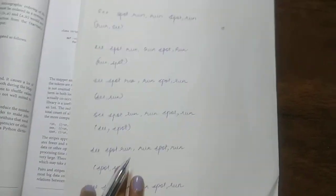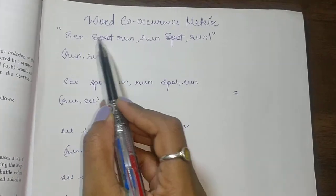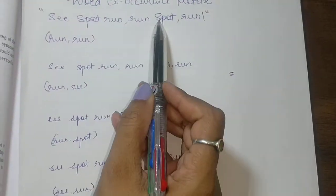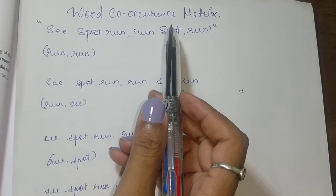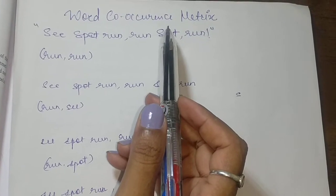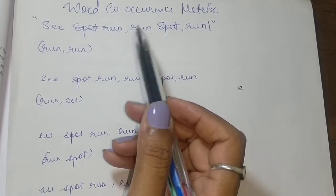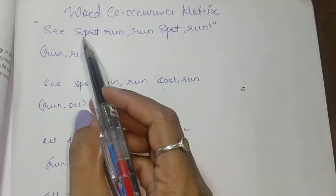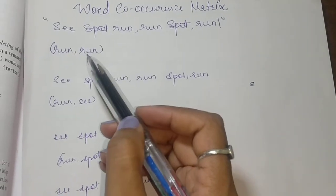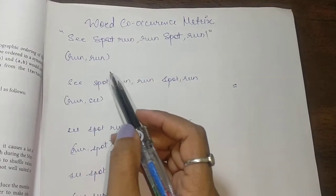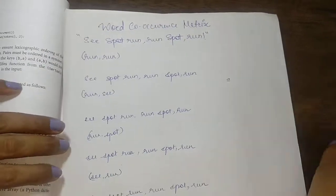The sentence is: 'see spot run run spot run.' Once again, I'd like to remind you that this is a single sentence. In the previous example we had two sentences; here we are just dealing with one sentence. Now let's look at 'run' to understand this — I'm going to draw some lines on this image.